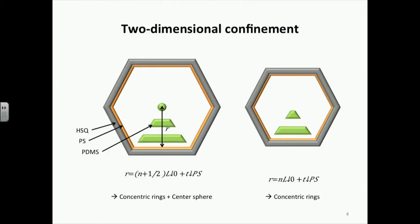In my presentation, I will focus on two-dimensional confinement. We patterned the template using electron beam lithography of hydrogen silsesquioxane (HSQ) resist. We functionalized the template with hydroxyl-terminated polystyrene (PS) brush, then spin-coated cylindrical morphology PS-PDMS block copolymer, solvent annealed it, and reactive ion etched it to expose oxidized PDMS line patterns.